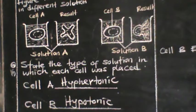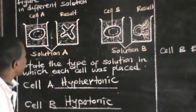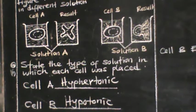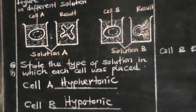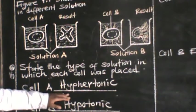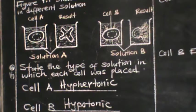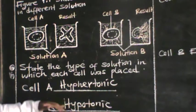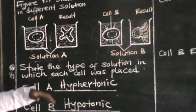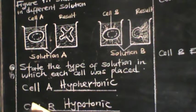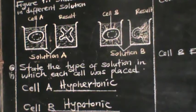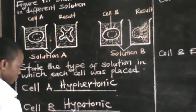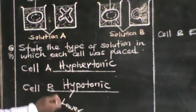What is a hypertonic solution? A hypertonic solution is a solution whose concentration is higher than the concentration within the cell — higher than the solution inside the cell.